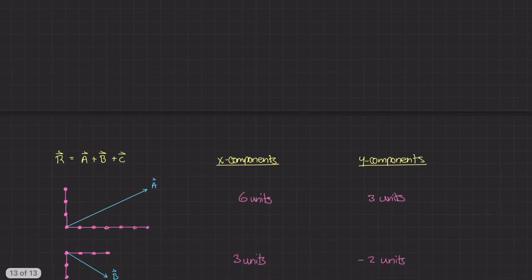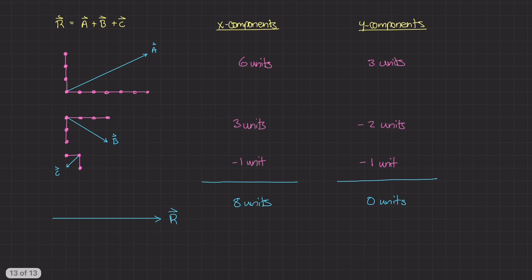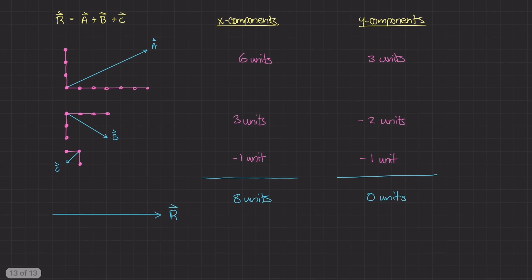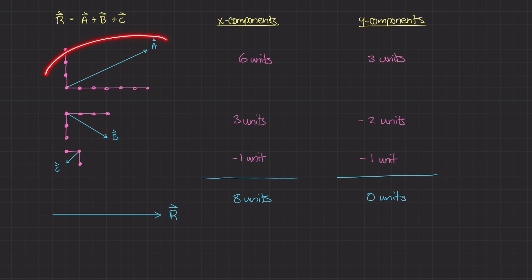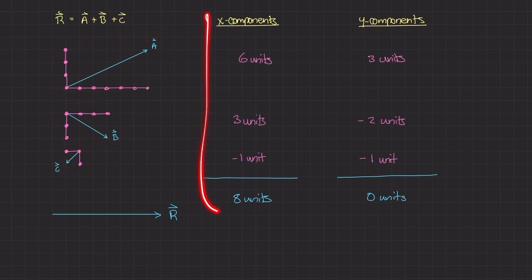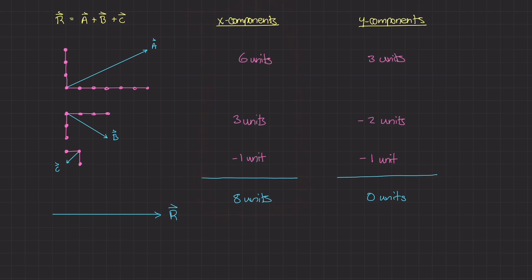So again, the reason vector addition works is because we're not adding the magnitudes of these vectors directly. What we're doing is breaking each vector into its components and adding the like components. Vector addition really is the addition of vector components.